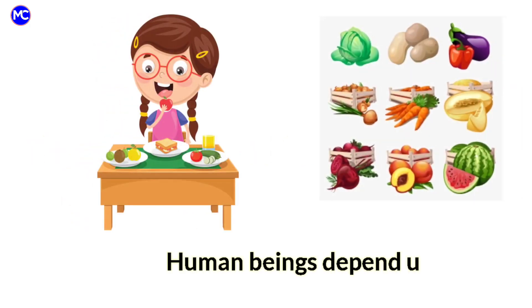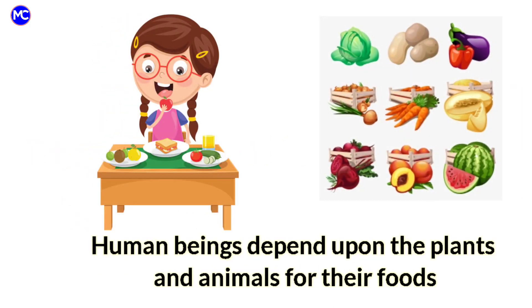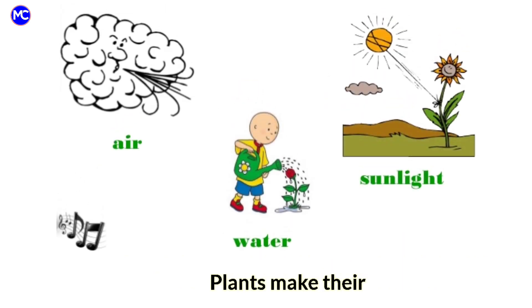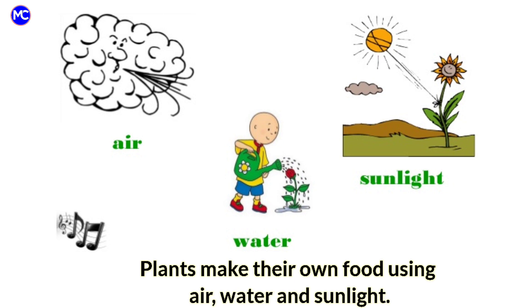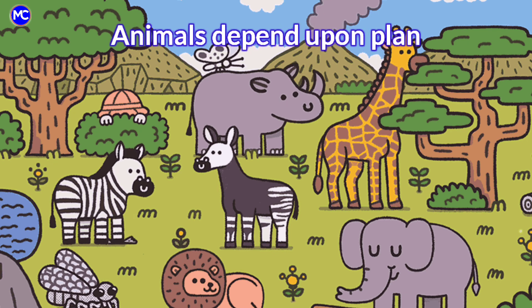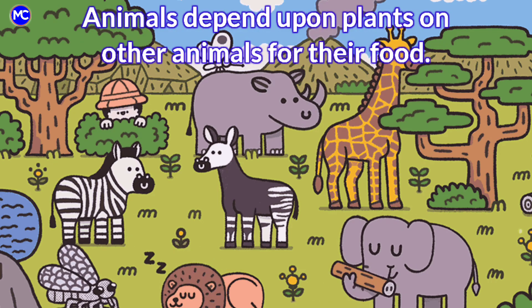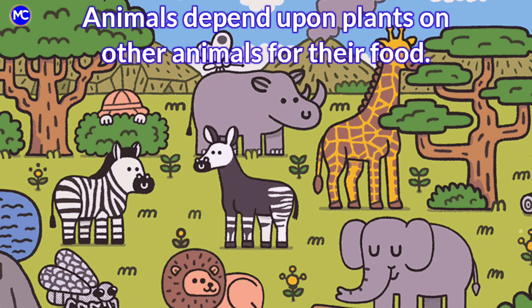Living things need food and water. Human beings depend upon plants and animals for their food. Plants make their own food using air, water and sunlight. Animals depend upon plants or other animals for their food.